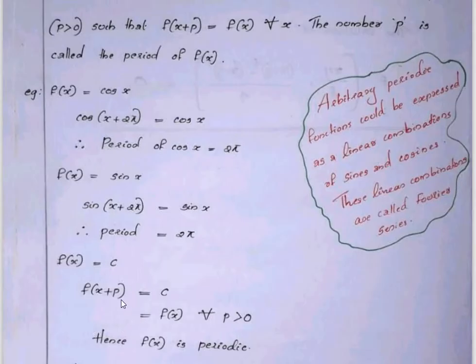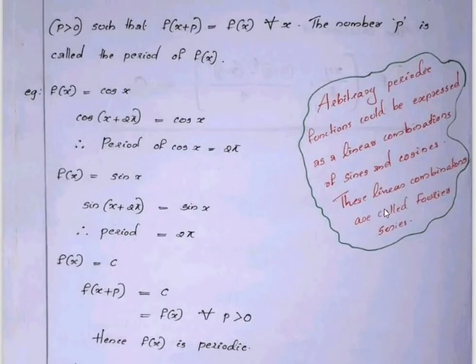Now, f of x equal to a constant is a periodic function. Arbitrary periodic functions can be expressed as a linear combination of sine and cosine. These linear combinations are called Fourier series.